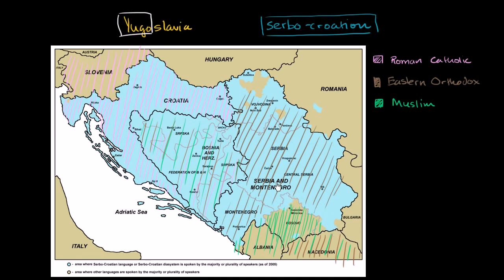What divides this area is really religion and history. Going back hundreds of years, this area was under the control of various empires: the Austro-Hungarian Empire and the Ottoman Empire. The Austro-Hungarian Empire was Roman Catholic, while the Ottomans were a Muslim empire, and they held different parts of this territory for hundreds of years. What you end up with is a mix of religions, and that often gets tied to what people perceive as their ethnicities. Here is a religious breakdown of the former state of Yugoslavia.